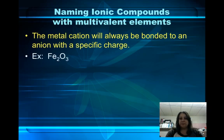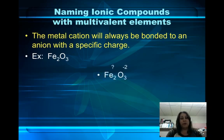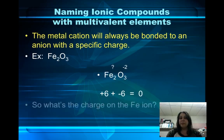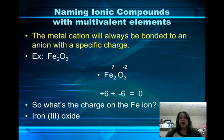Here's an example. We know the metal cation is Fe, which is iron, and it is bonded to the anion oxygen. Oxygen has a specific charge — it's negative 2 — but we don't know the charge on the iron. We do know that 3 times negative 2 is negative 6, and the compound is neutral, which means I need a net positive 6 charge to balance out the net negative 6 charge. So what number times 2 is positive 6? That's right, it's 3. So we name this iron(III) oxide. The Roman numeral 3 represents the charge on the iron.